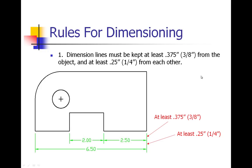We're going to go through a few of the rules for dimensioning. First, dimension lines must be kept at least three-eighths of an inch from the object and at least a quarter inch from each other. This is for aesthetics and readability. You want to make sure this first line of dimensions is far enough away from the part that you can clearly read them and that they are not crowding the part.